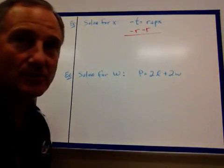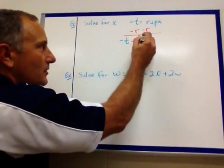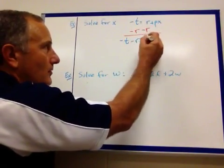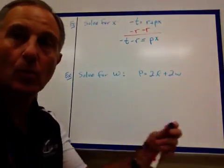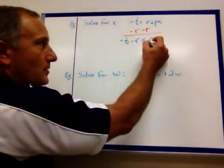Now, you can't actually combine the negative t minus r, but I can write negative t minus r. Nothing wrong with doing that. That's what we want to do. There's just no number, so we can't do it.